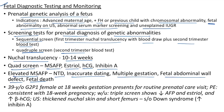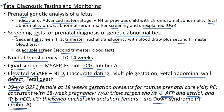Clinical case: 39-year-old G2P1 at 18 weeks presents for prenatal care. Triple screen shows reduced AFP and estriol, elevated beta-HCG. Ultrasound shows thickened nuchal skin and short femurs — suggestive of Down syndrome. In Down syndrome, quadruple screen shows reduced AFP and estriol, elevated beta-HCG and elevated inhibin A; nuchal translucency is thickened.